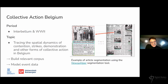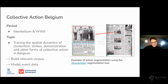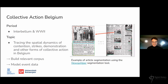Analyzing protest events in newspapers has a huge scope, so let's narrow it down. Collective Action Belgium is a case study of social history which aims to trace the spatial dynamics of strikes, demonstrations, union actions, and other forms of collective action as reported in Belgian newspapers during the Interbellum period and World War II. The goal is to develop a method for building a relevant newspaper corpus mentioning collective actions by using an article segmentation tool developed within DataKBRBE and keyword searches. Event information available in the articles will be semantically coded in order to analyze the collective action data.